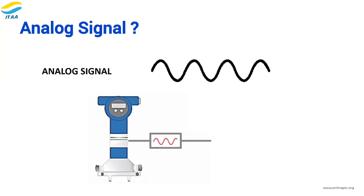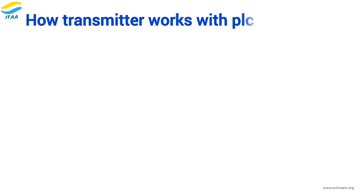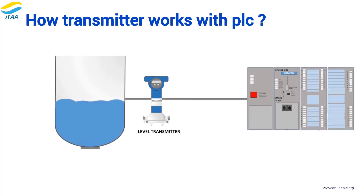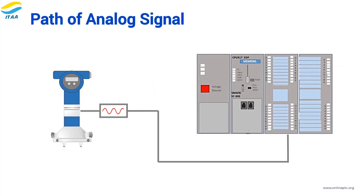Today, we're going to learn about analog signals. We'll explore how a level transmitter works with a PLC, Programmable Logic Controller, or DCS, Distributed Control System. We'll follow the path of an analog signal from the transmitter to the PLC and how it controls our processes.